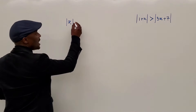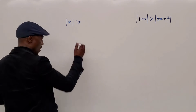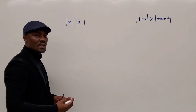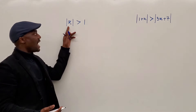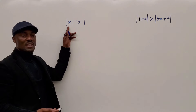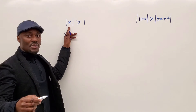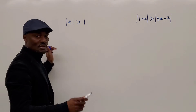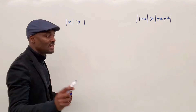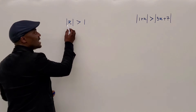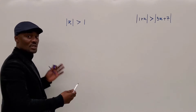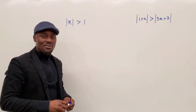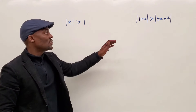So if the absolute value of x is greater than 1, it simply means x has to be more than one step from zero. I might be going to the right or to the left, but one thing I'm sure of is that when I find x, the number of steps I take from zero to get to x has to be greater than 1. And that's the rationale behind solving this.